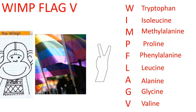Now, what are the amino acid names for each one-letter code present in WIMP flag V? W is for tryptophan, I is for isoleucine, M is for methylalanine, P is for proline, F is for phenylalanine, L is for leucine, A for alanine, G for glycine, and V for valine. Make sure to remember the phrase WIMP flag V.